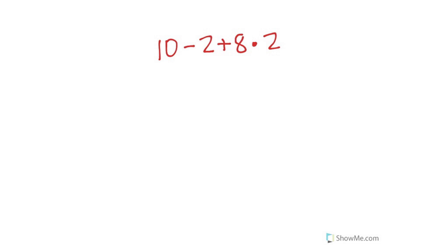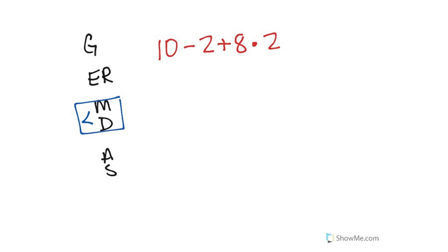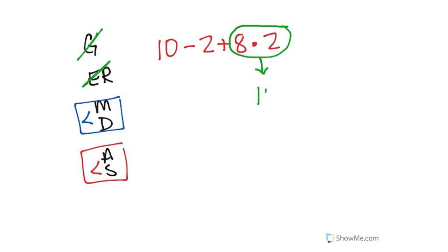I have three operations: subtraction, addition, and multiplication. That already tells me I have to use germ desks. And remember, I want to see this every time you have more than one operation. Don't forget — connect the homies; they have each other's back. Step number 1: do we have grouping symbols? Nope. Step number 2: do we have exponents? Nah. Step number 3: multiplication or division, whichever you see first. I see multiplication — 8 times 2 is 16. Bring down what you haven't used: the plus, the 2, the minus, and the 10.